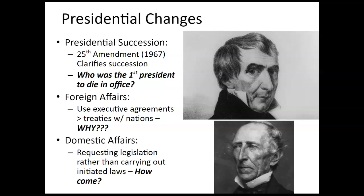In domestic affairs, presidents may request legislation rather than simply carrying out existing initiated laws. Basically, this links to the president's agenda — if there's something they want to get done, they might look at existing laws and focus on a program to get to what they want. For example, if a president wanted to address the opioid crisis and didn't like existing laws, they would work through Congress to request legislation — whether an amendment or direct laws — to change what's already in place.